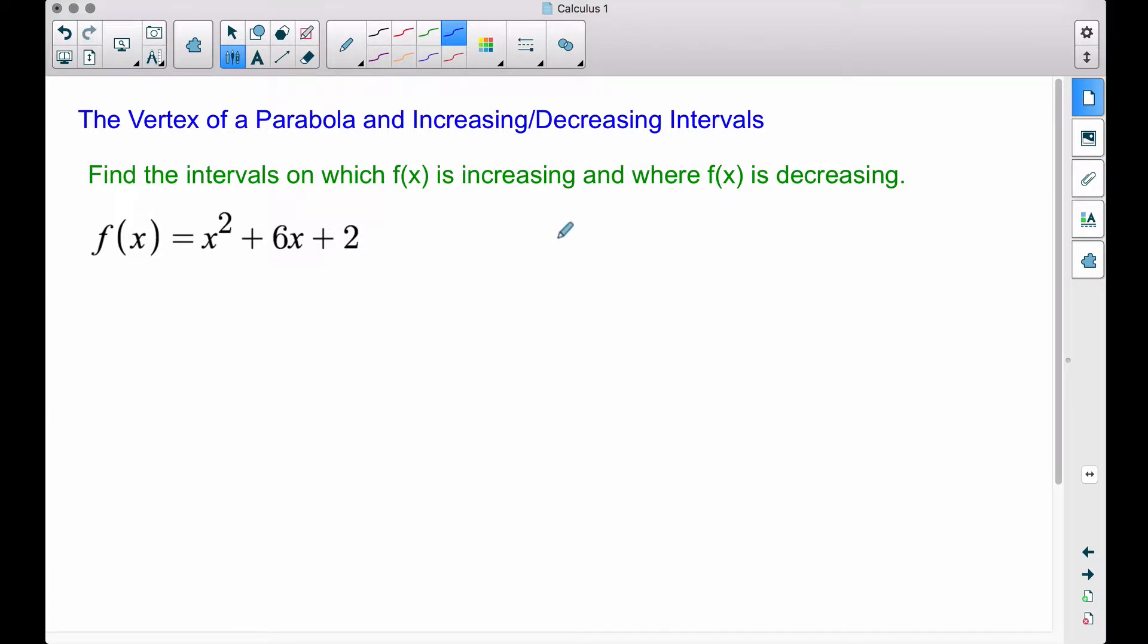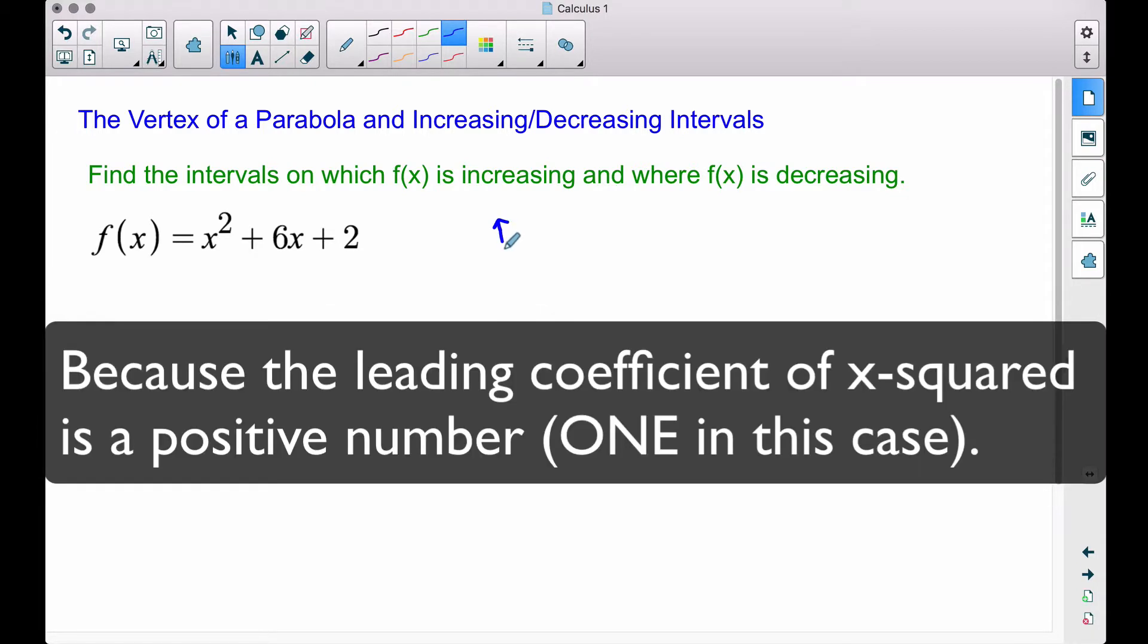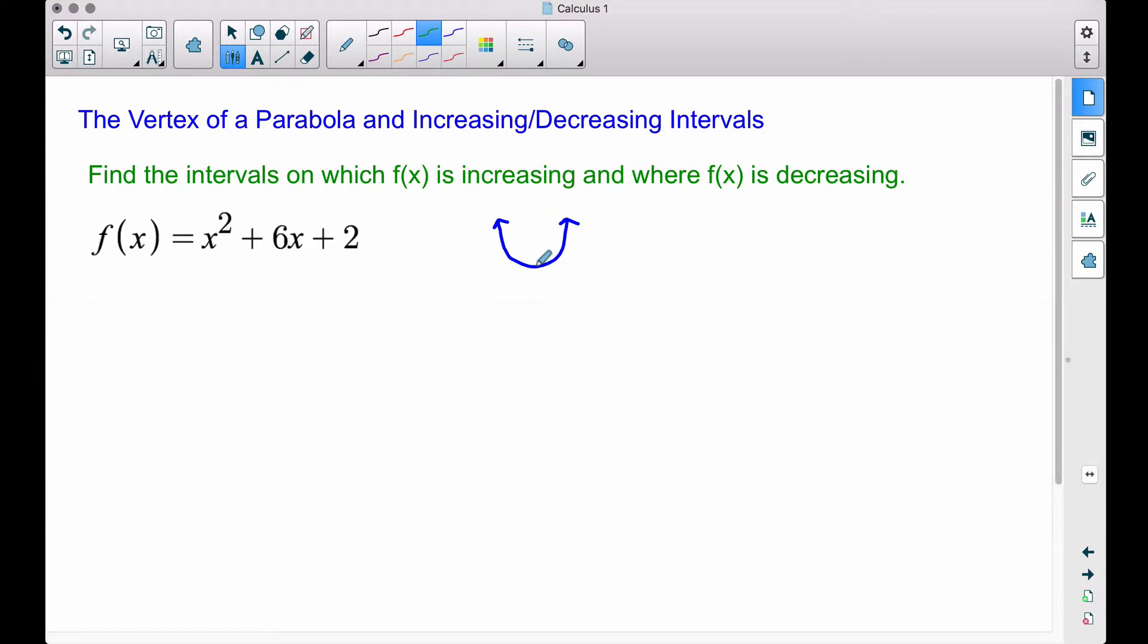Now thinking back to your college algebra days when you were dealing with parabolas, we have an x squared, that's our highest degree here. This is a parabola, a quadratic, and it's guaranteed to open up. So automatically what this tells us is that our vertex is going to be a minimum, the lowest point on the curve. On the left side, this is where our function is decreasing. On the right side of this vertex, this is where our function starts to increase. That's all pure algebraic.